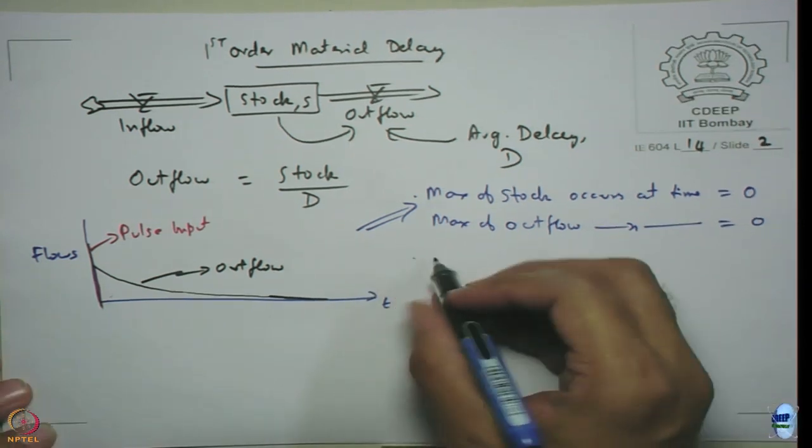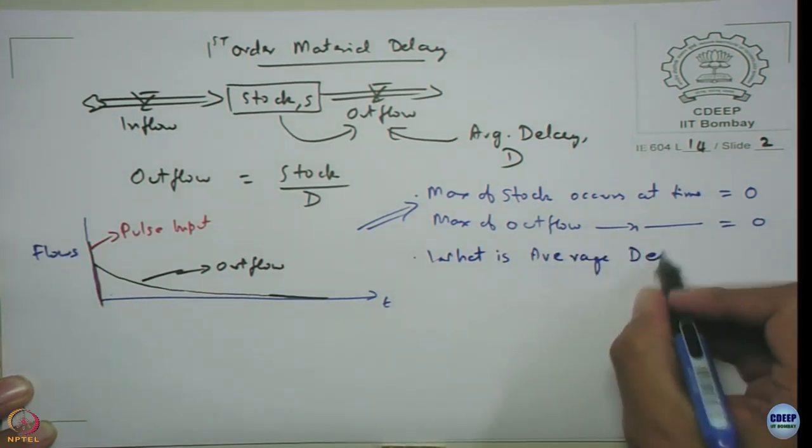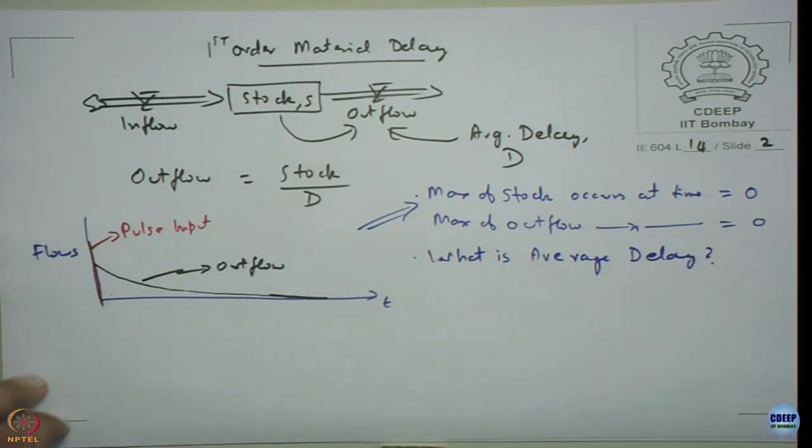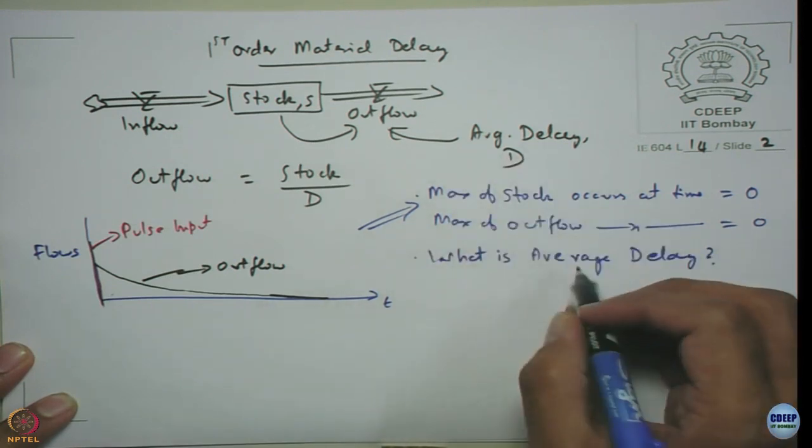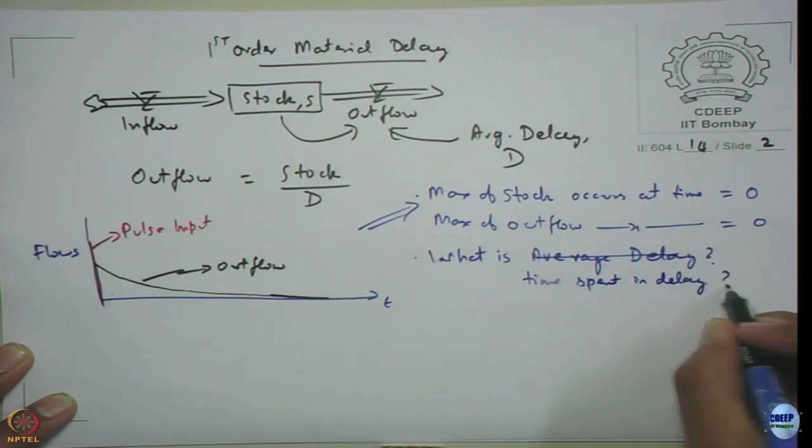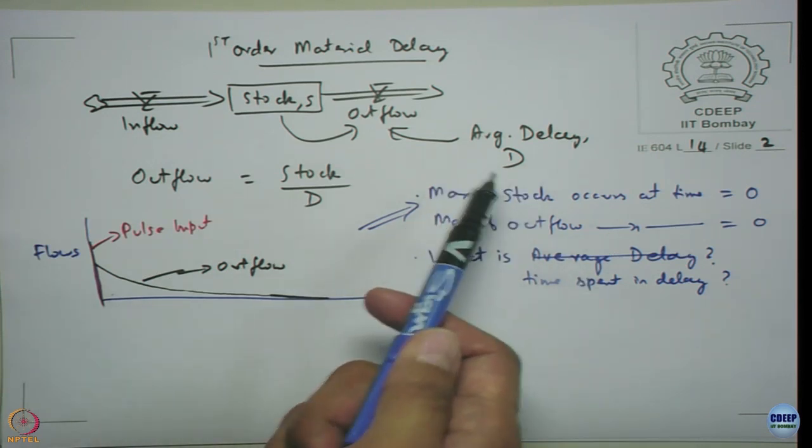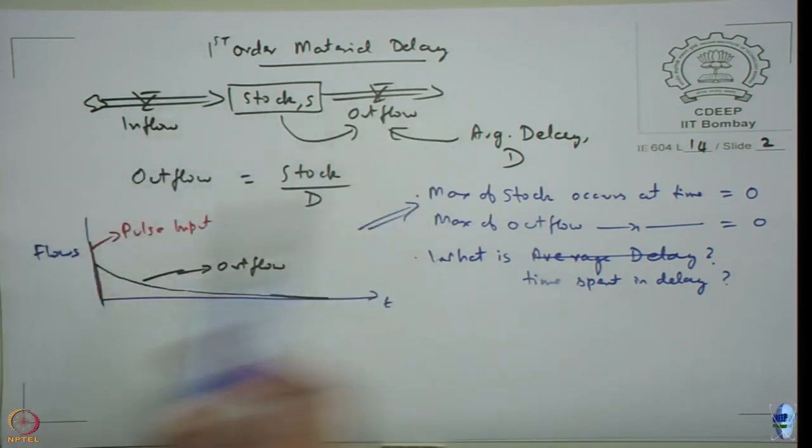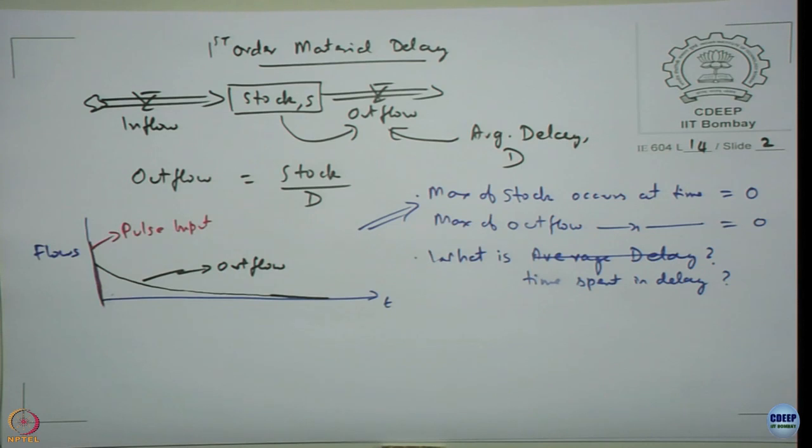Question is what is average delay or average time spent by the material in stock? Intuitively we know that the average time spent in the stock, or let us call it average time spent in delay, logically speaking it should map out to D, because you assumed it as the average delay. But we can see whether this kind of representation actually ensures that the average time the material spends in the stock is actually equal to the time D. We can try to verify that.